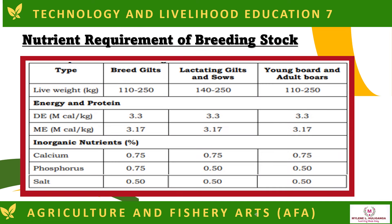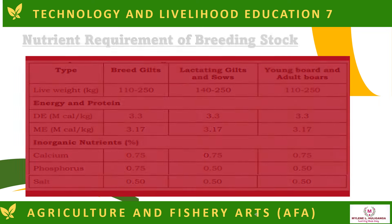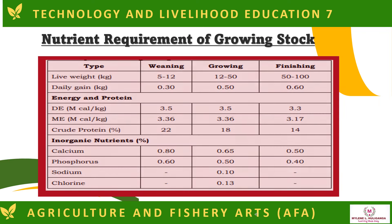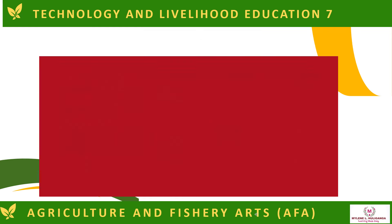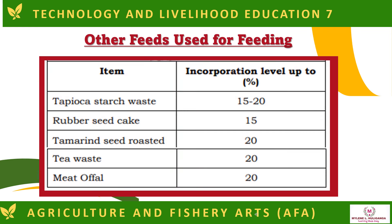Below are the nutrient requirements of breeding stock and growing stock. Soybean peptides can be used for feeding, and below is a list of other feeds used for feeding.